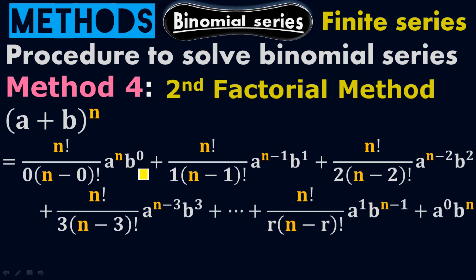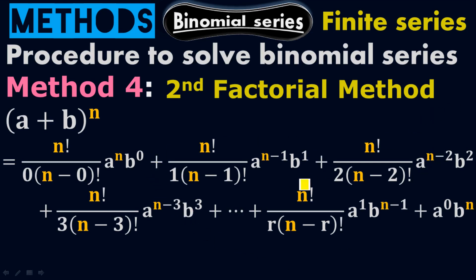The rest of the powers for a and b are absolutely the same as in method 1, method 2, and method 3. The power of a starts in descending order: a to the n, then n minus 1, then n minus 2, n minus 3, and so on. The power of b starts from 0 — like 0, then 1, then 2, then 3 — going in ascending order.